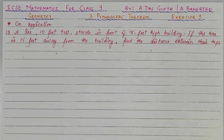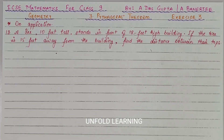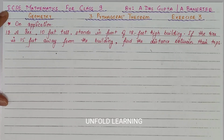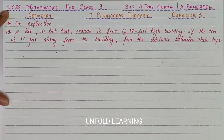Hello everyone, welcome back to my YouTube channel Unfold Learning. Today I am going to share a solution video from ICSE Mathematics for Class 9 by Adaz Gupta and Nebinar Ji, on the topic of Geometry, 3rd unit, Pythagoras Theorem. Questions 1 to 18 have already been uploaded on my channel page and the rest of the solutions are linked in the description box. If you have come to my channel, please do subscribe and press the bell icon to get notifications of upcoming videos.